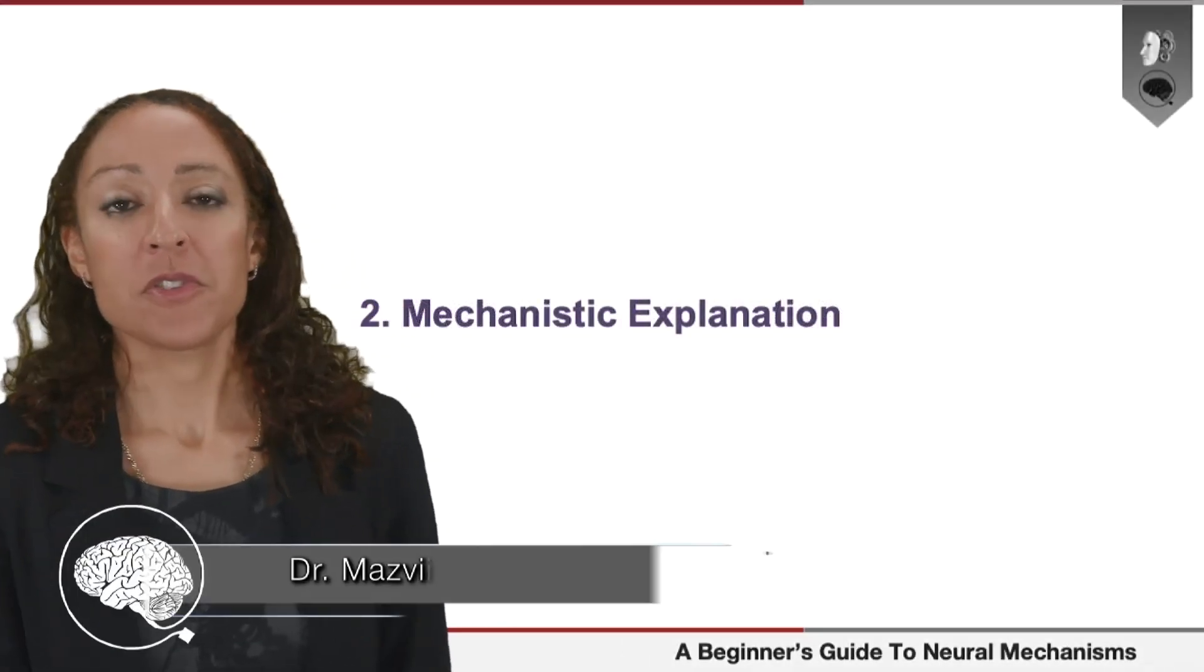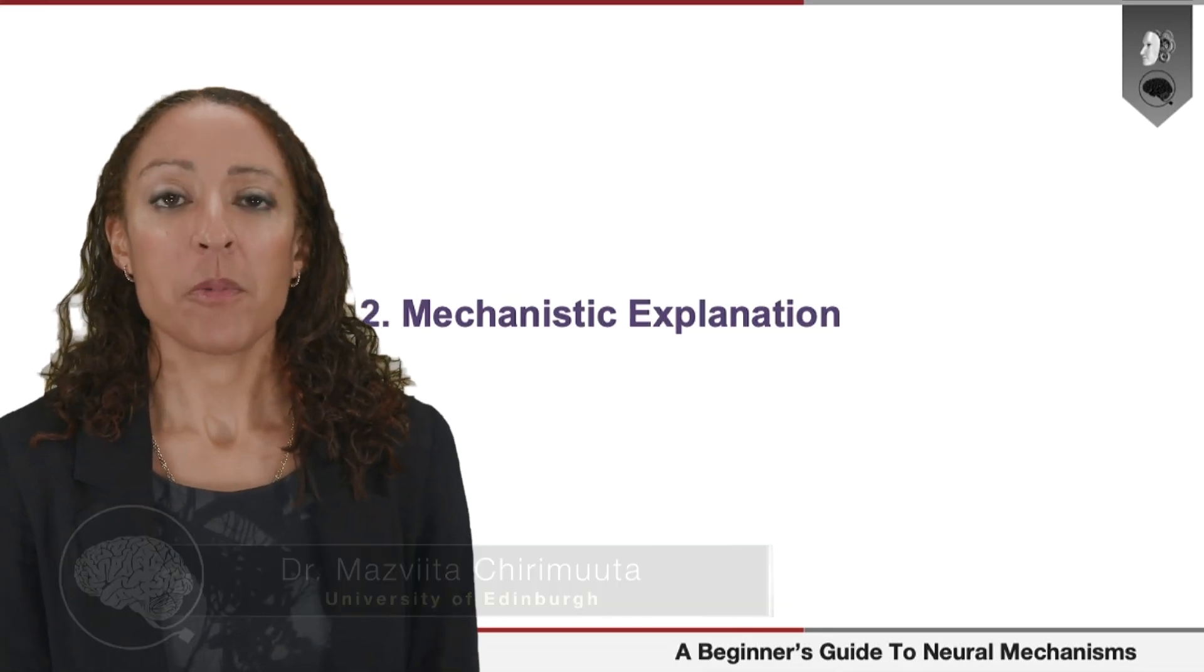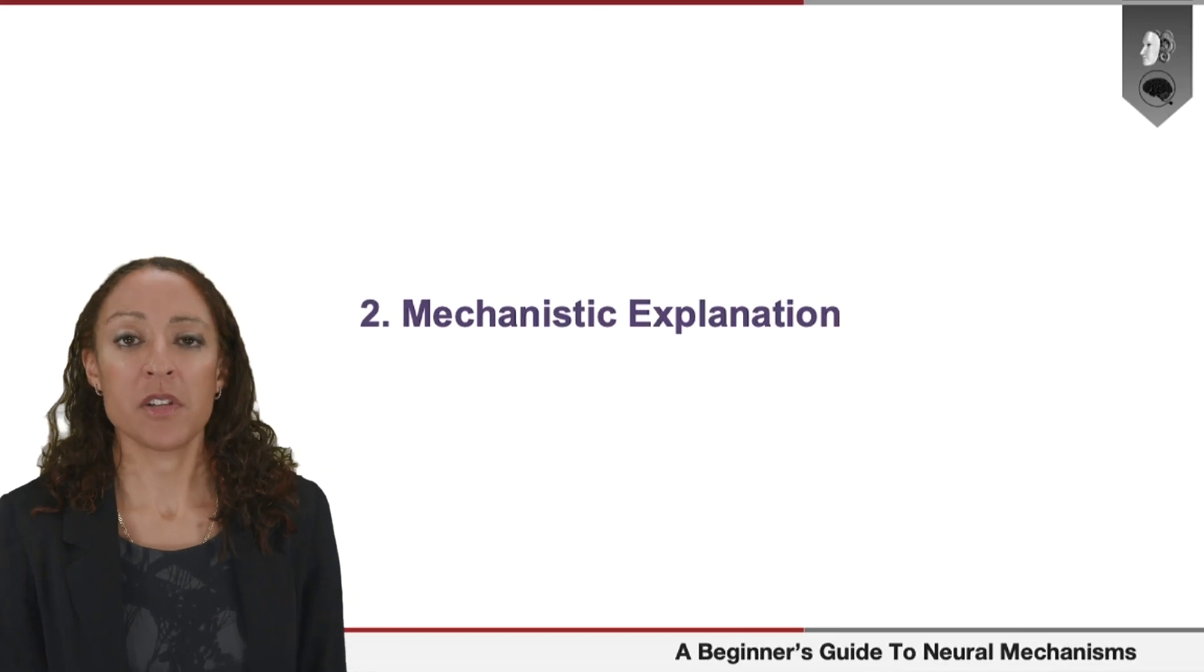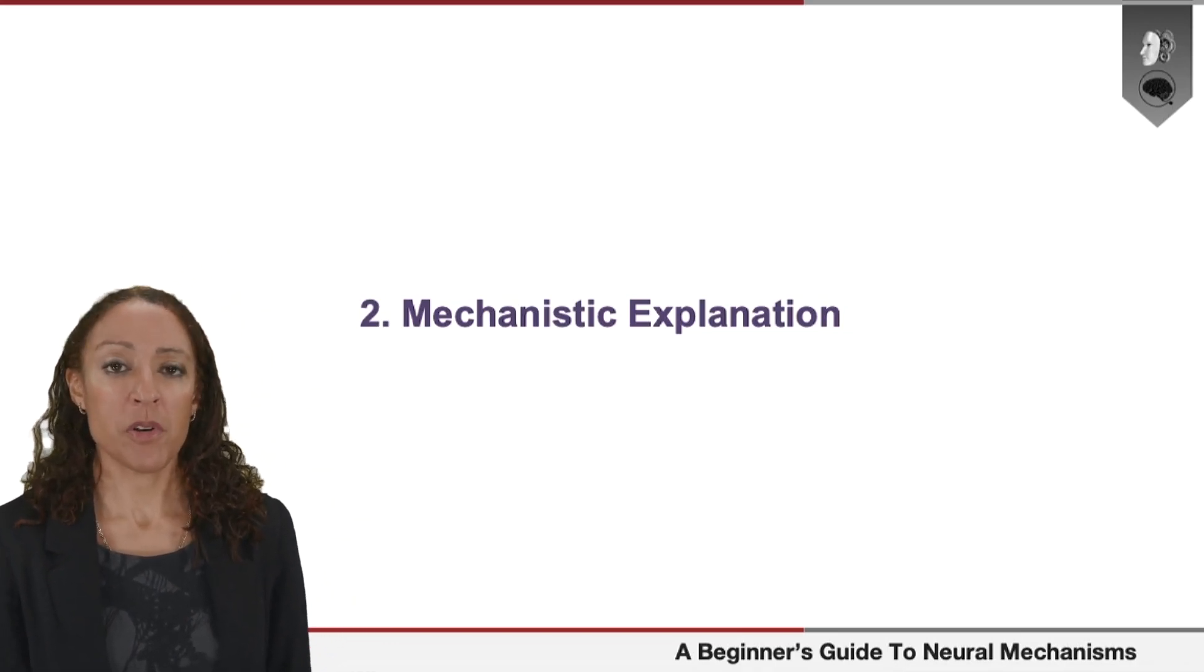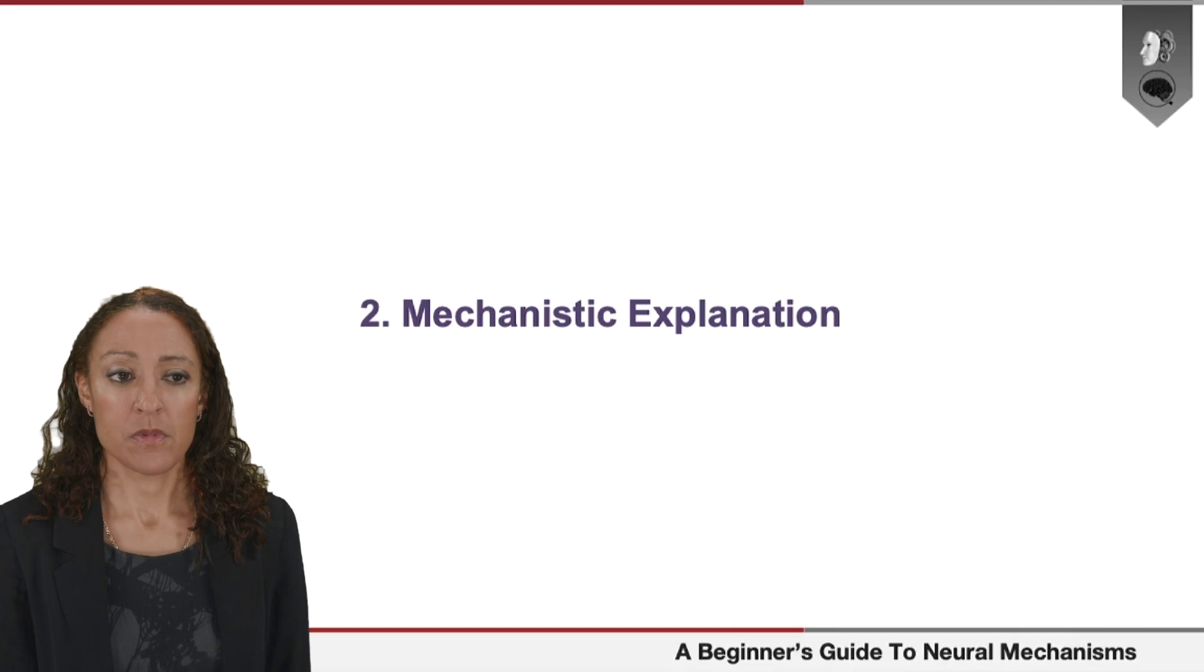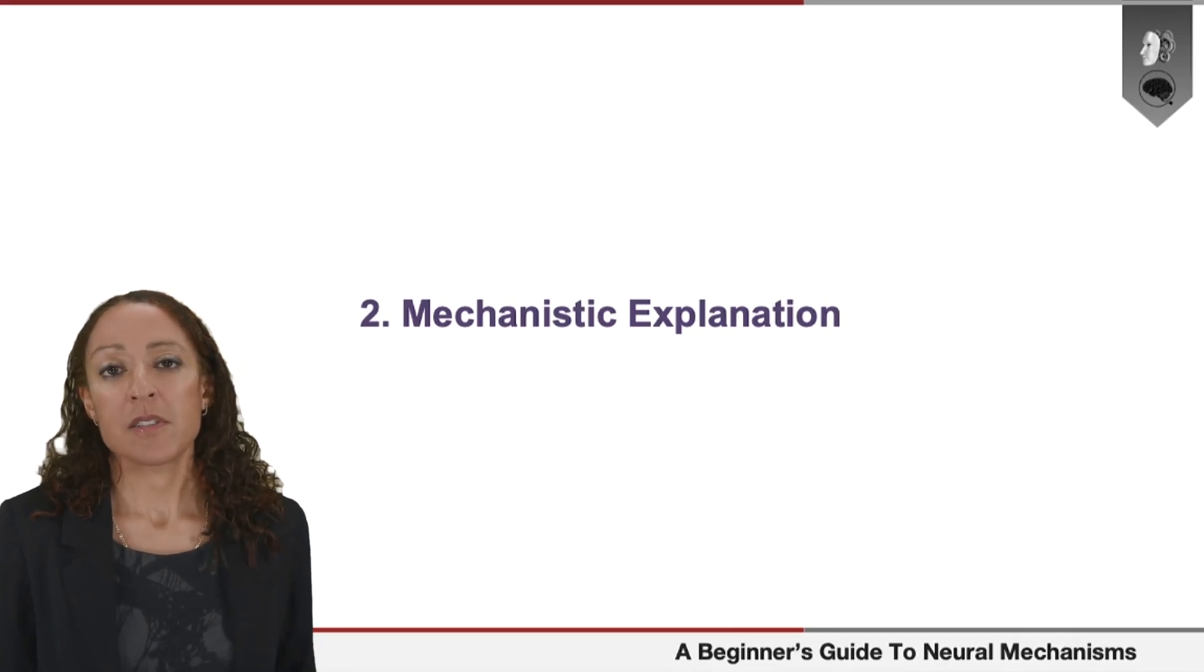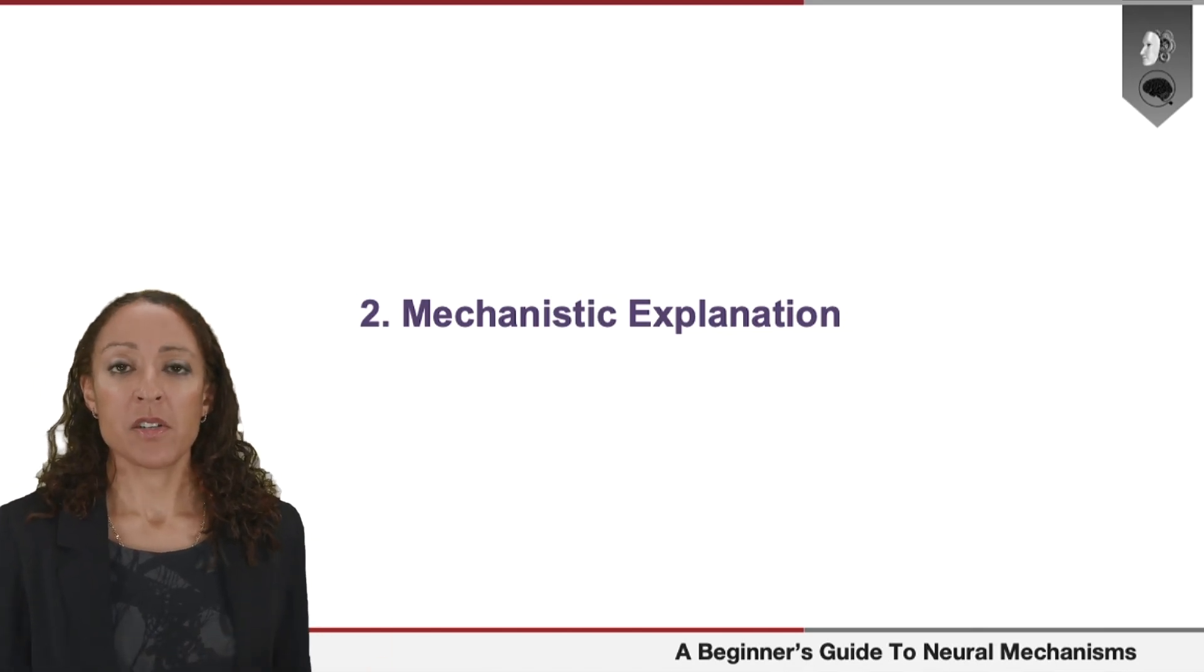In this part of the lecture, I'm going to focus on mechanistic explanation. This is a topic which has received a lot of attention amongst philosophers of neuroscience in the last 20 or so years, and we can think of it as one of the dominant ways of trying to understand and make sense of neuroscientific explanation. The core idea is that when neuroscientists give explanations, what they're trying to do is describe mechanisms that go on in the brain.